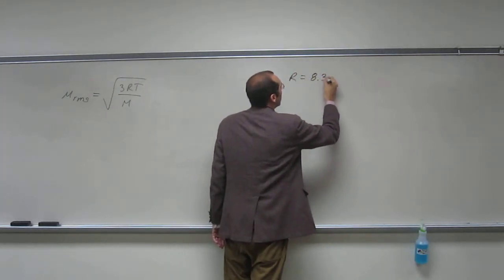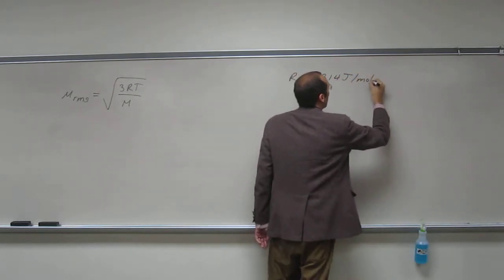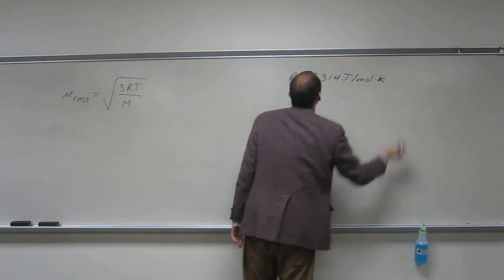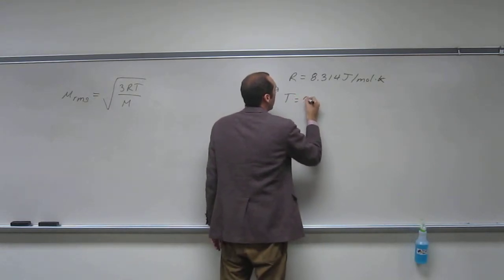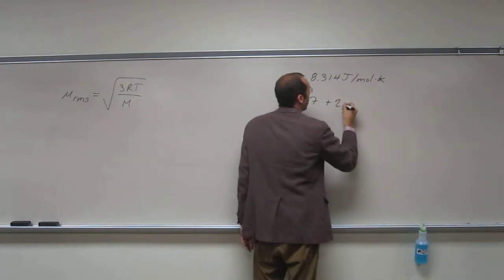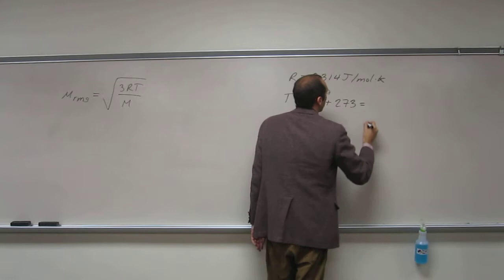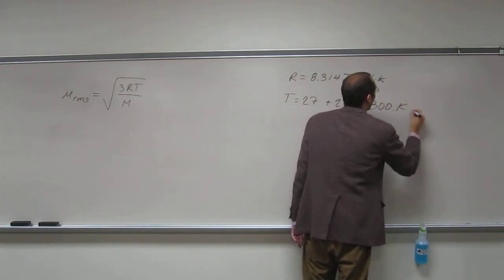And in this case you're going to use 8.314 joules per mole kelvin. The temperature we said was 27 degrees Celsius. So when we add that to 273.15, we're going to get 300 kelvin.